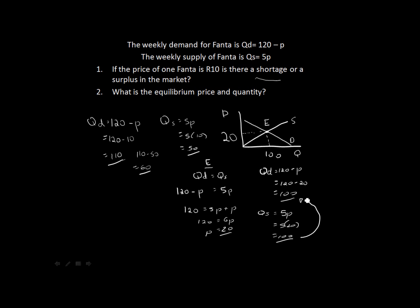The main things to remember from this question: equilibrium is where the supply and demand curves meet, or where quantity supplied equals quantity demanded. Mathematically, take your functions, set them equal to each other, and solve first for the equilibrium price. Then fill that equilibrium price into either function to find the equilibrium quantity, and remember to mark it on your graph as well.